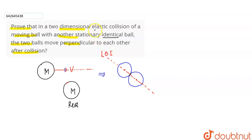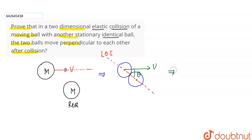Since we have an elastic collision as given in the question, along the line of impact, momentum and kinetic energy are conserved. Now, the second body was at rest, and the first body had velocity v horizontally before the collision. If the line of impact makes an angle theta with this direction, then we resolve velocity v into two components. The component along the line of impact is v cos theta.